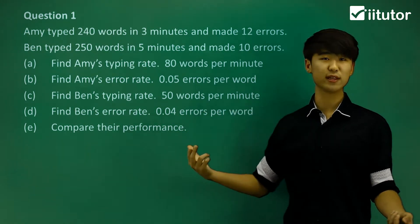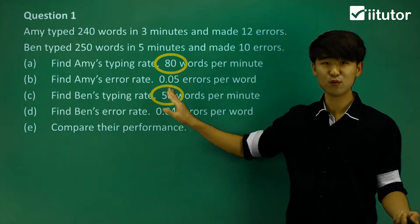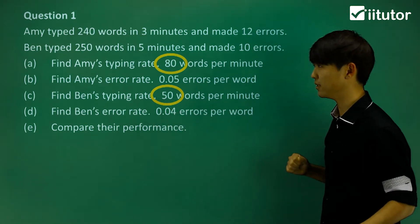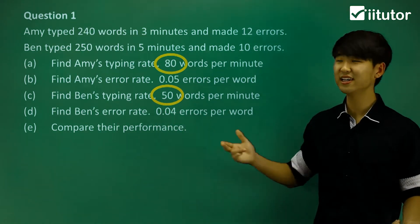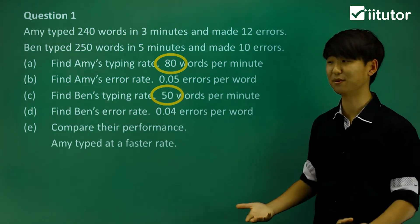So let's look at the typing rate, who did better? Well, Amy's rate was 80 words per minute, while Ben's rate was 50 words per minute. Well, then obviously, because 80 had a higher rate, then Amy typed at a faster rate, she had a better performance.